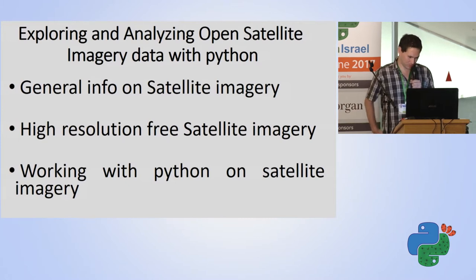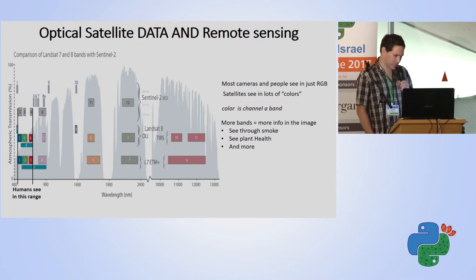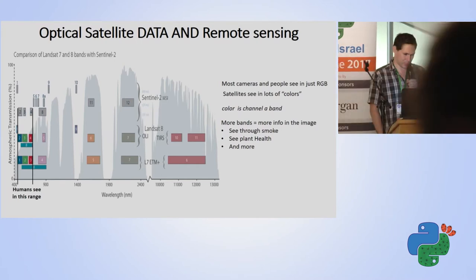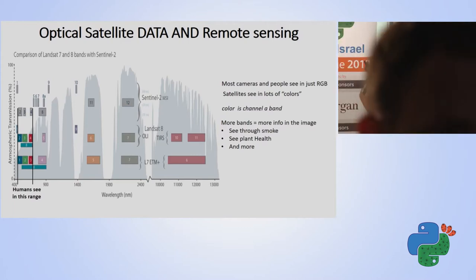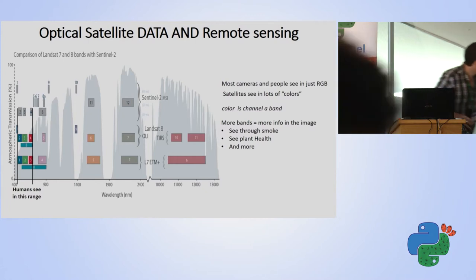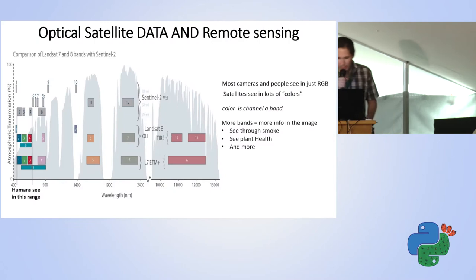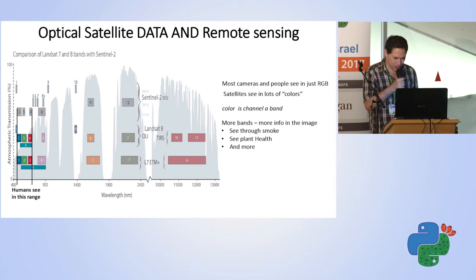What we are talking about here is optical satellite data. Satellite images are very much like a camera image that people see in RGB, but the satellite image can see many more bands or colors. If a human can see in a certain band range, a satellite image can see across all of those bands, giving us the ability to detect smoke, plant health, and much more.